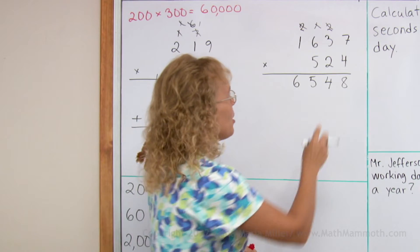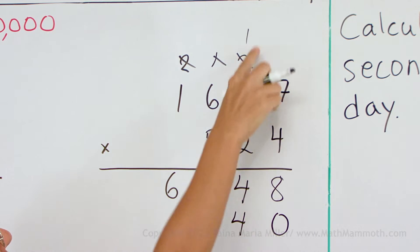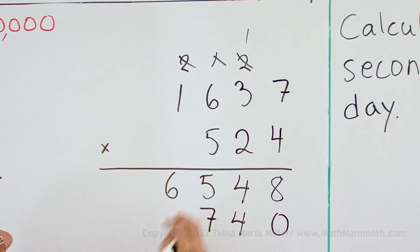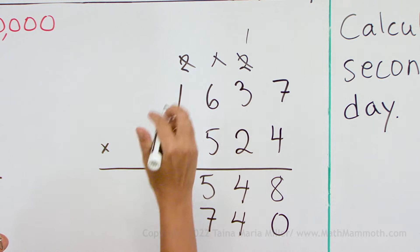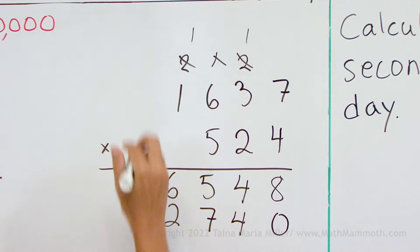And then 20 times the number, zero here. Two times seven, 14. And then here's six plus one is seven, and then two times six, 12. And two times one plus one is three.